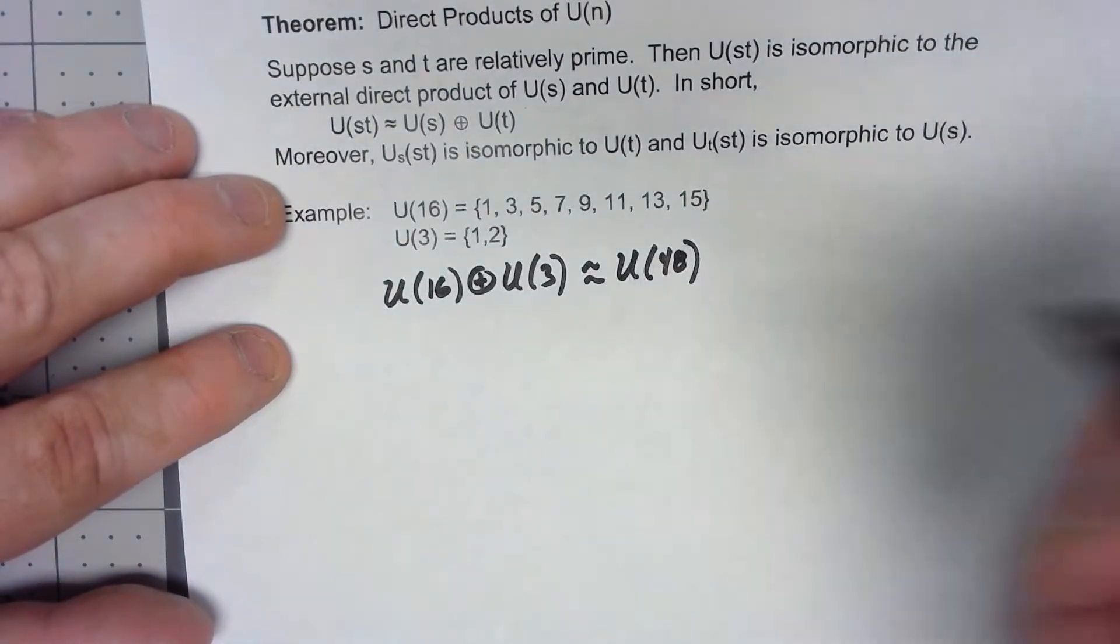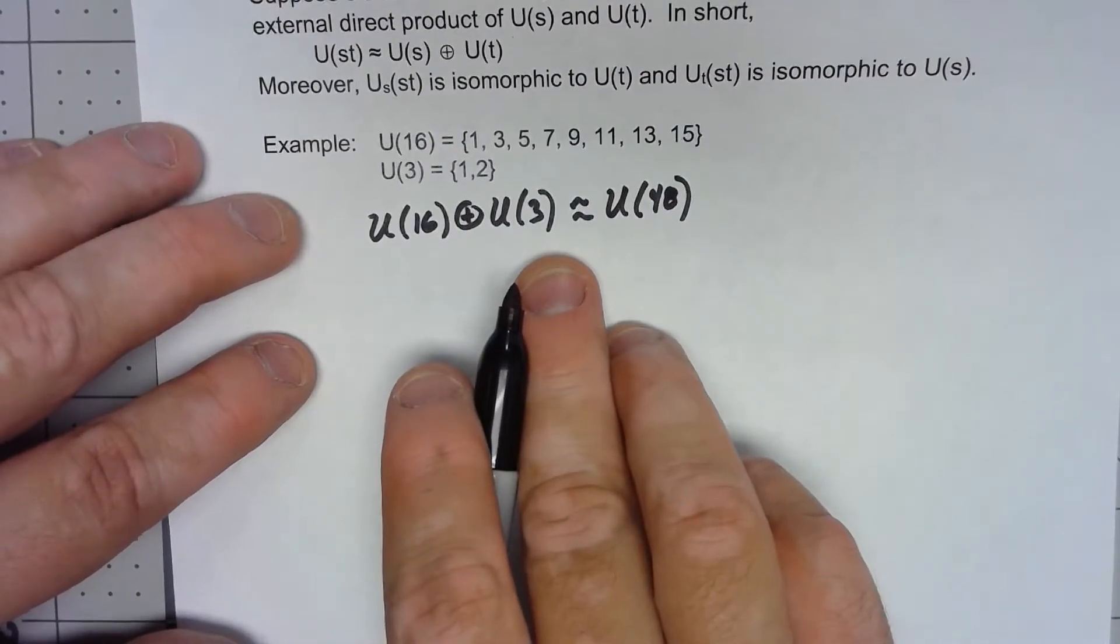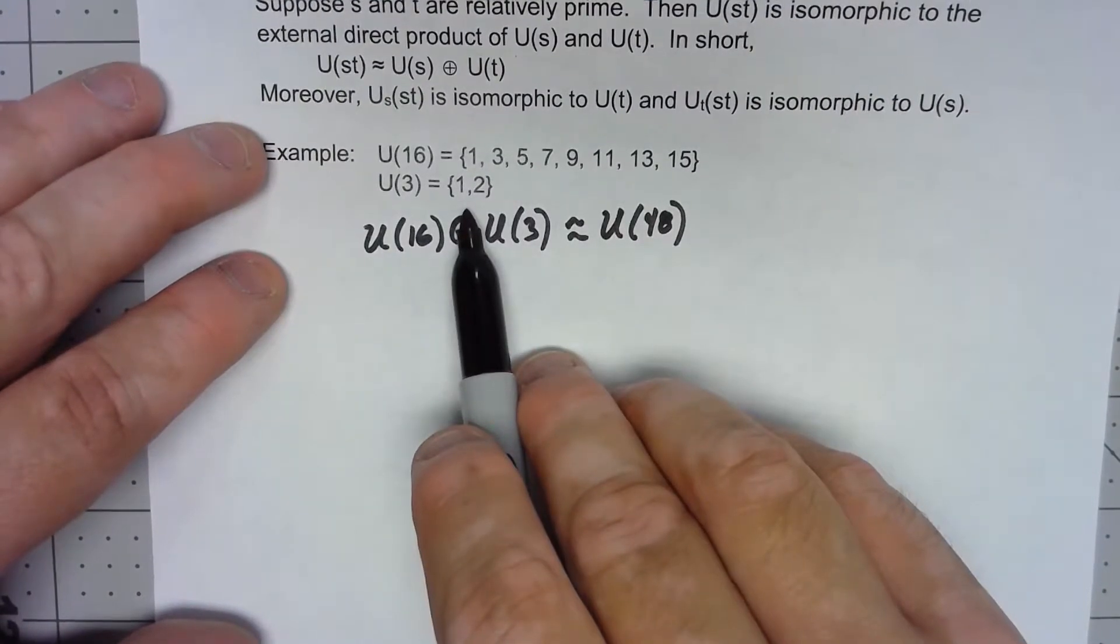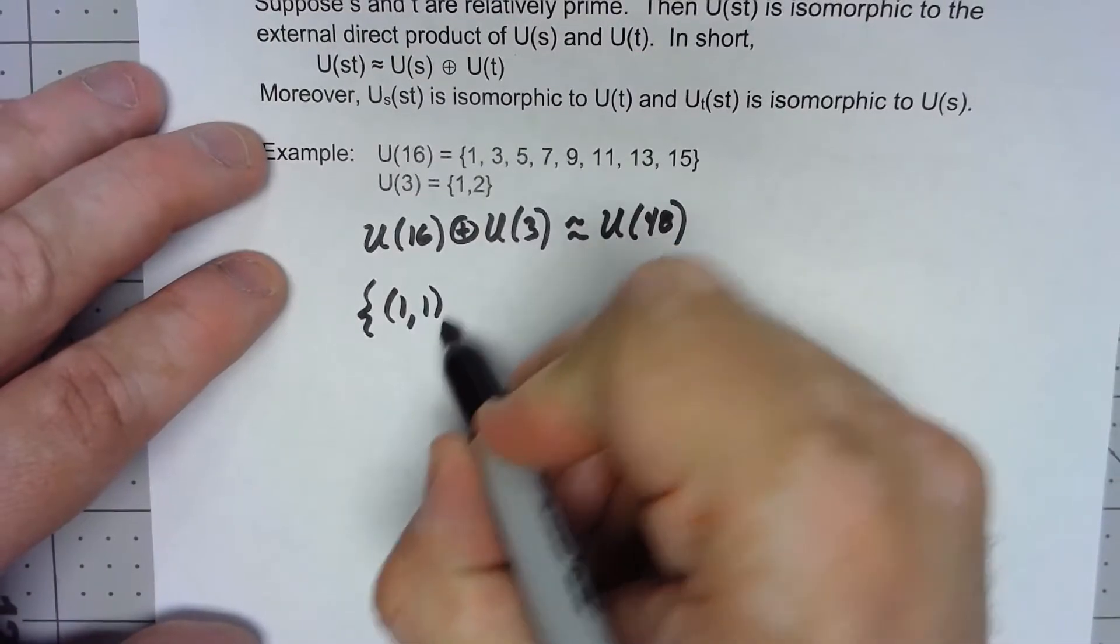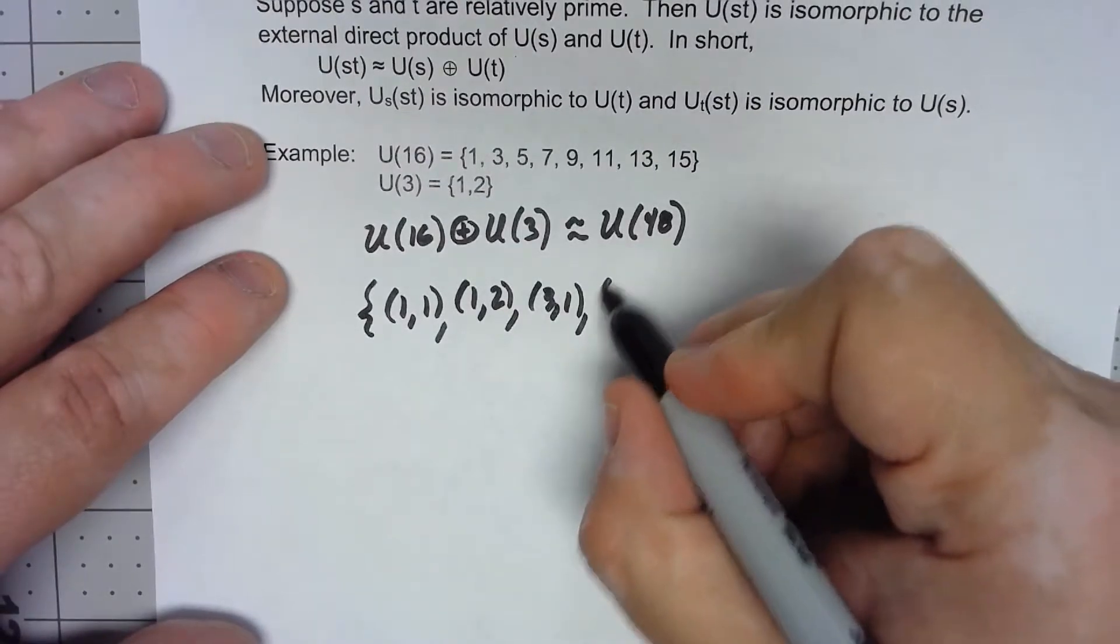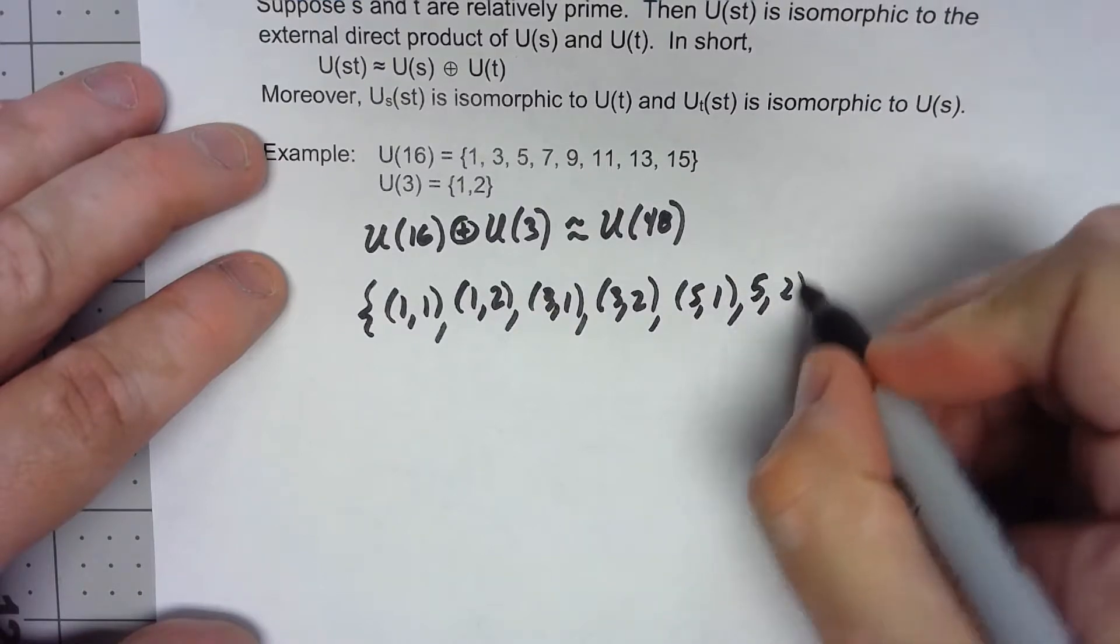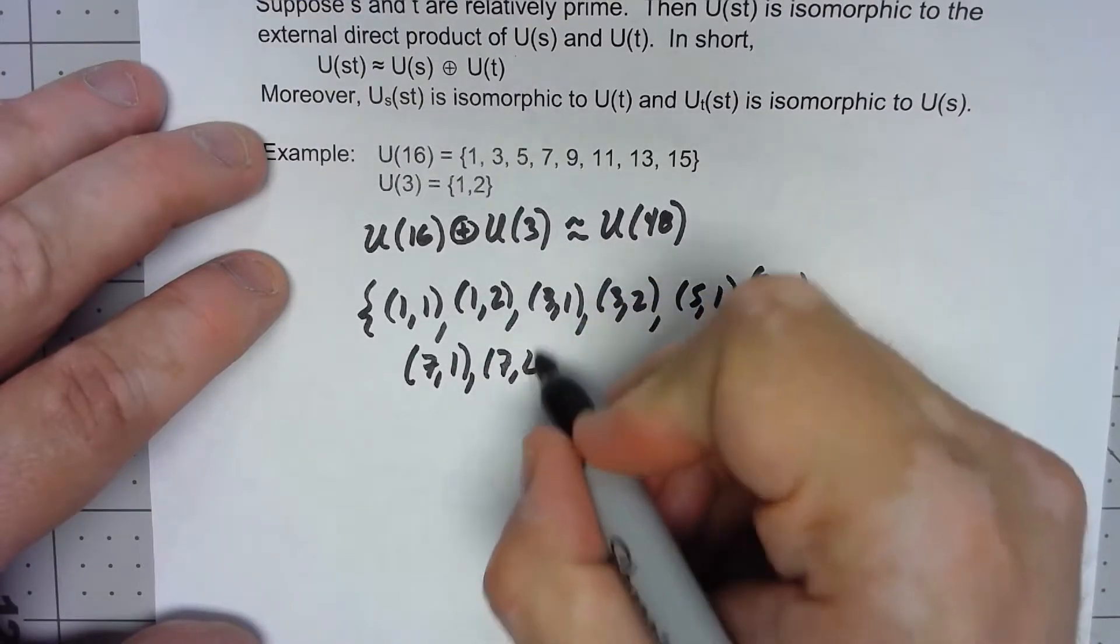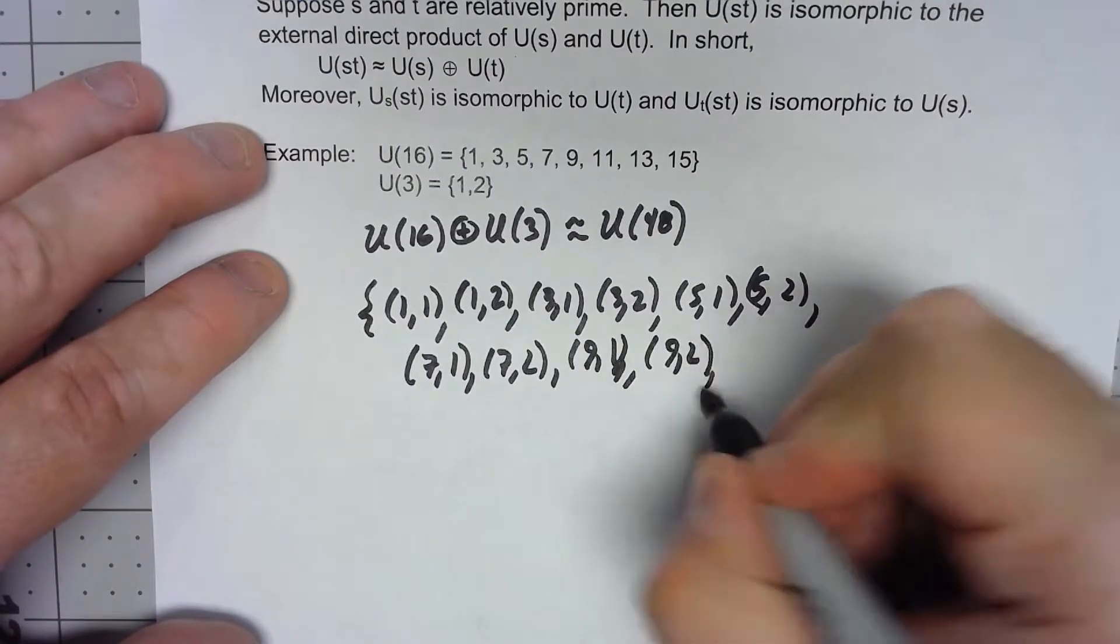So what are the elements of U(16) direct product with U(3)? Well it's going to be the set of all ordered pairs one of which comes from U(16) one of which comes from U(3). So we're going to have (1,1), (1,2), (3,1), (3,2), (5,1), (5,2), (7,1), (7,2), (9,1), (9,2), (11,1), (11,2), and continuing with (13,1), (13,2), (15,1), (15,2).